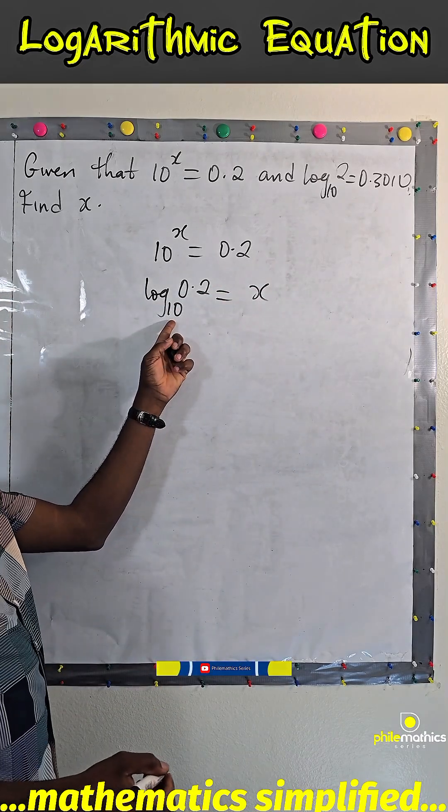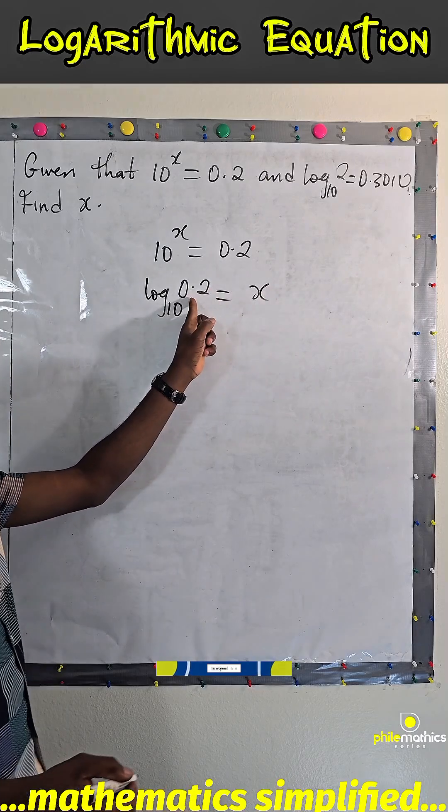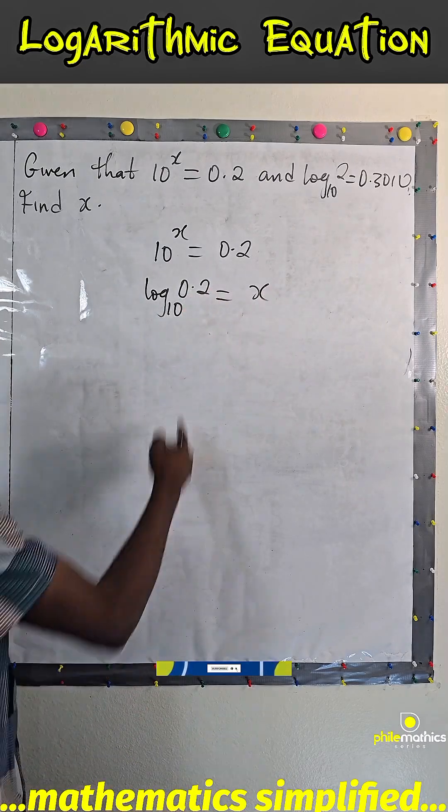That's 10 to the power x equals 0.2. Now, we are looking for this.